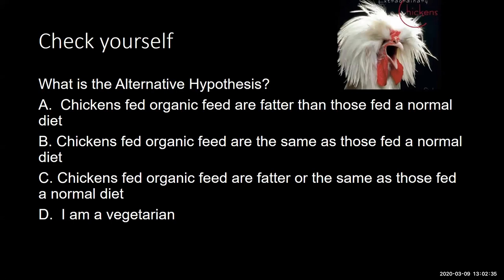Now, which one would be a good alternative hypothesis? A: chickens fed organic feed are fatter. B: chickens fed organic feed are the same. C: chickens fed organic feed are fatter or the same. The only answer that works as an alternative hypothesis is A — chickens fed organic feed are fatter. B can never work as an alternative because it has the word 'same,' and C also has 'same,' so neither can be the alternative. The only valid alternative hypothesis is A.